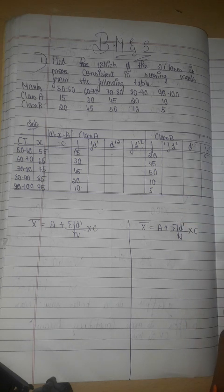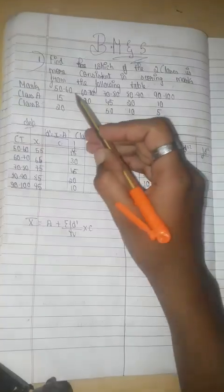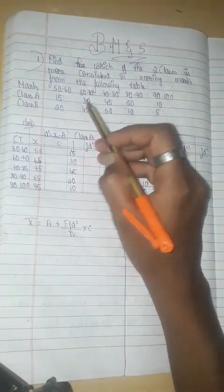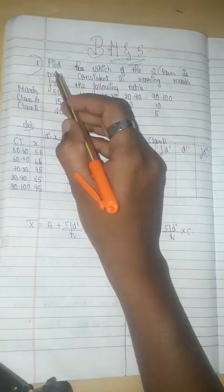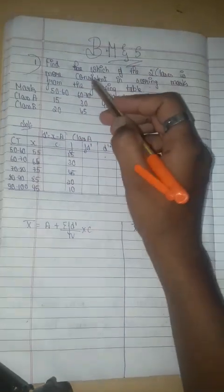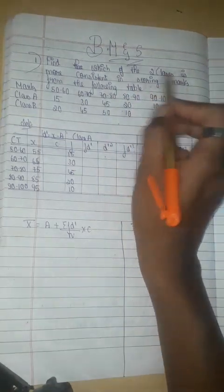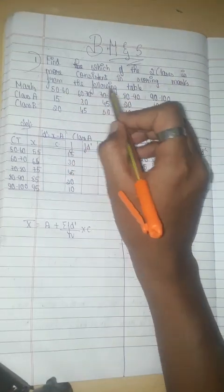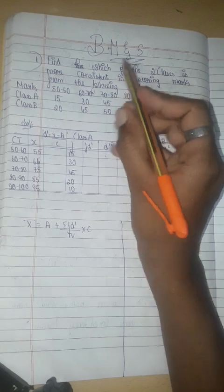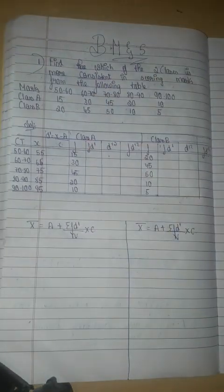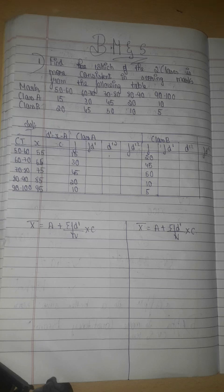The first problem is: which of the two classes is more consistent in scoring marks from the following table? I will explain the consistency, variations, and fluctuations — that is, the standard deviation. Now we will find out the standard deviation.